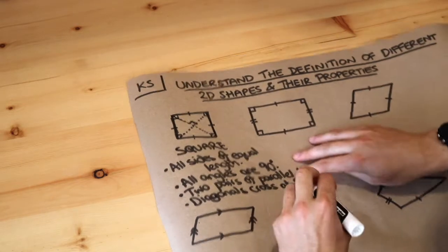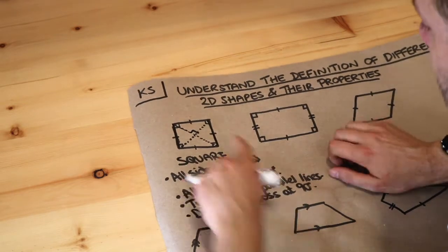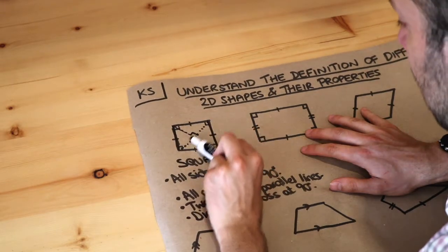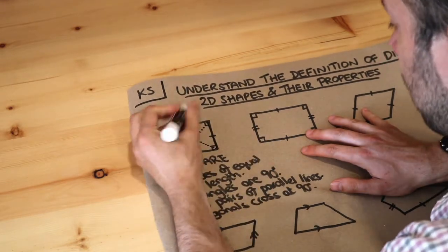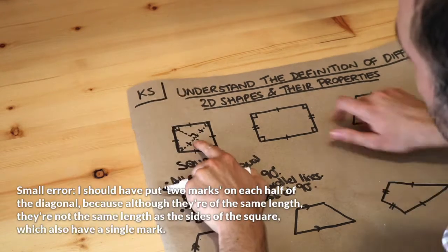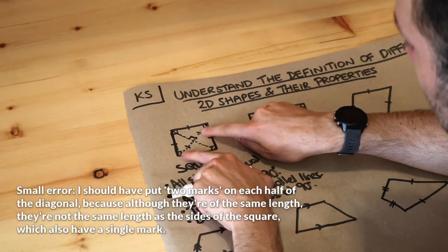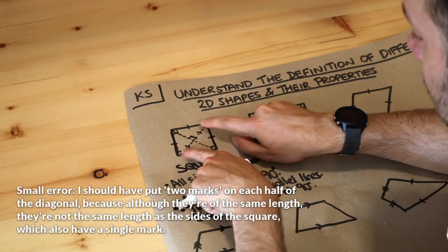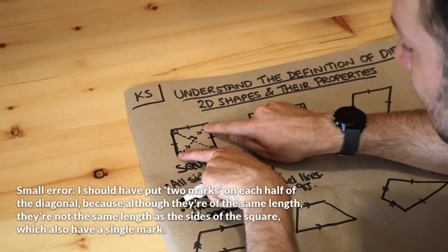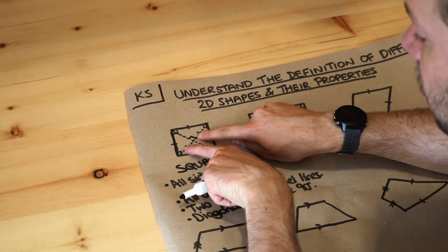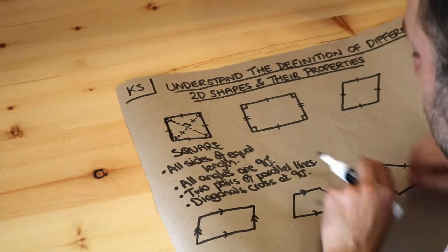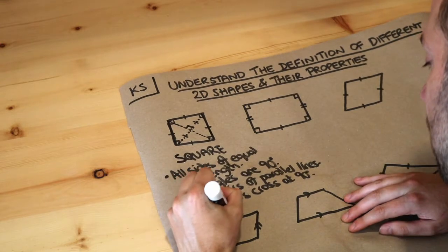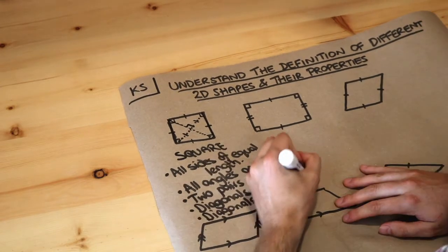We could also say that the diagonals bisect each other. What I mean by bisect is that this diagonal cuts that other diagonal in half. This length here is the same as that length — the two halves either side of the crossing point are the same length. So this diagonal is bisected, meaning it's cut into two equal halves. The diagonals bisect each other.